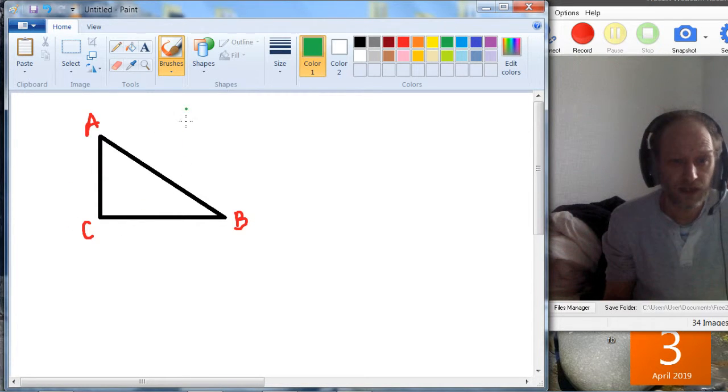Let's say we start with this triangle ABC and we know that the lengths are 3, 4 and 5.